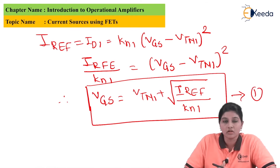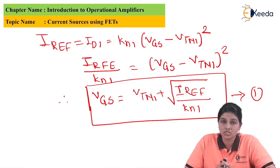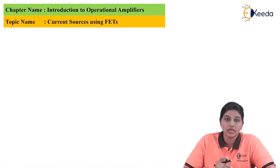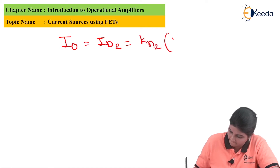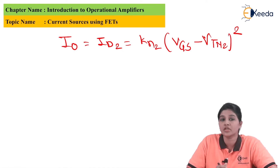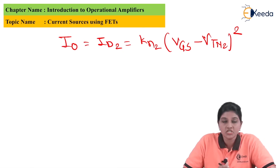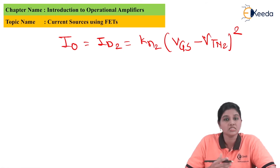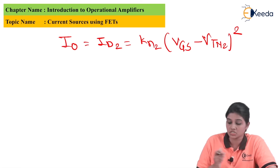If we want the drain current to be independent of the drain-source voltage, the MOSFET must always operate in the saturation region and lambda must equal 0. The output current is the current flowing through the drain terminal of MOSFET M2. Therefore, ID2 = KN2 × (VGS − VTN2)². Since VGS is the same for both MOSFETs, we substitute the value of VGS from Equation 1 into this expression.